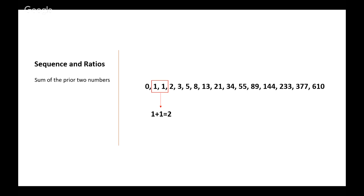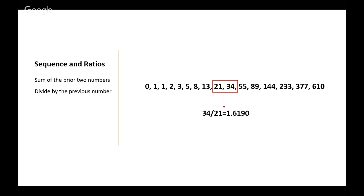The Fibonacci sequence starts with 0, 1, 1, 2, 3, 5 — each number is the sum of the two prior numbers. The sequence contains many unique mathematical properties. If a number is divided by the previous number, it will approximate 1.618. So 34 over 21 equals 1.619, and 55 over 34 equals 1.6176. The further up we go with the numbers, the closer we get to the 1.618 ratio.